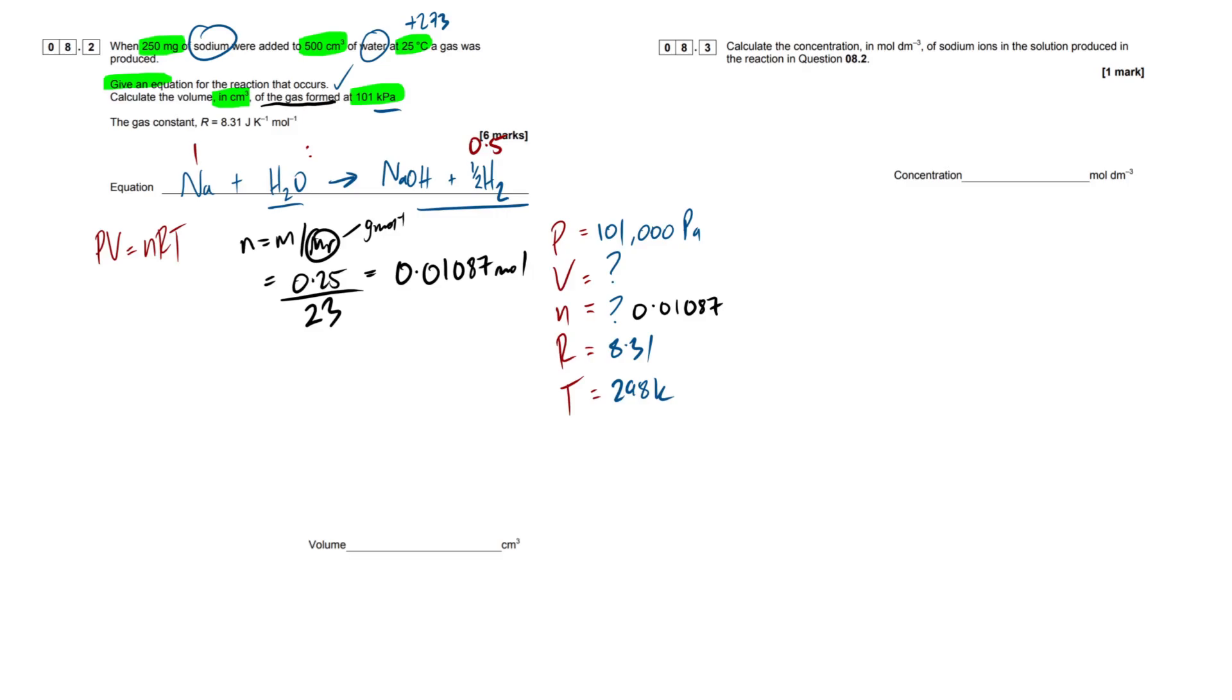So our molar ratio here is one sodium reacts to produce half a mole of hydrogen gas. Now, that's just because hydrogen is diatomic. Now, if you'll write this down, so 1 to 0.5 molar ratio. Alternatively, you could put 2 to 1, because you want your ratios to be integers ideally, but this is still correct. Therefore, the moles of hydrogen equals this number right here, divided by 2. And all that is is 5.435 times 10 to the minus 3 mole.